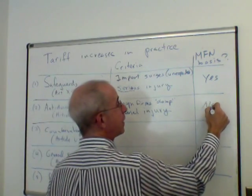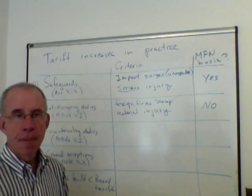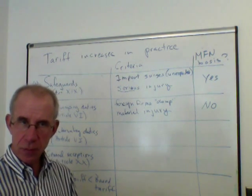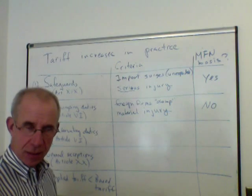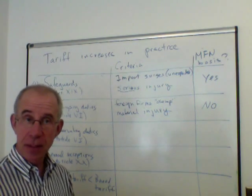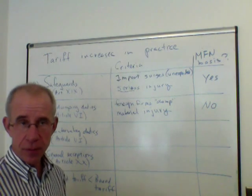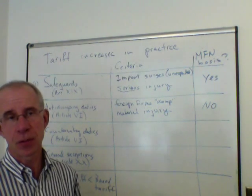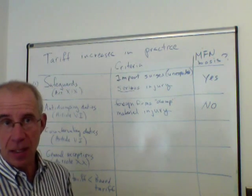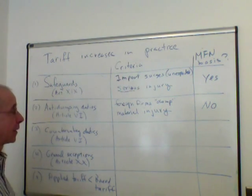So it's not on an MFN basis — you are raising the duties on particular sources of the product. It's essentially trying to level the playing field: foreign firms have sold below production costs, and so the tariff is imposed on them and them alone. In a different video, we talked about differential tariffs on different countries, and that would be the economic analysis one might use to analyze anti-dumping duties.